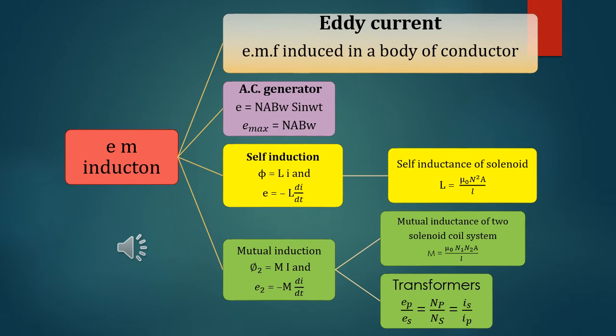The induced EMF in a coil is equal to -L di/dt. Self induction of a solenoid is given by L = μ₀n²A/l.